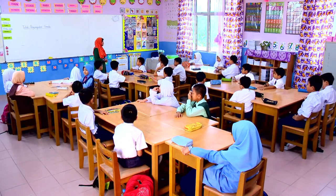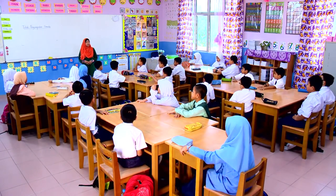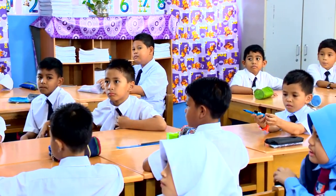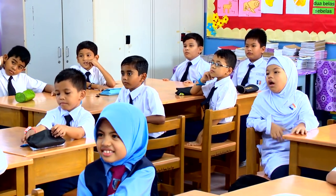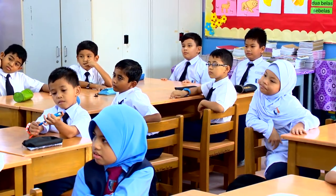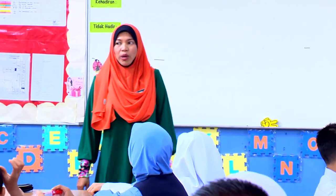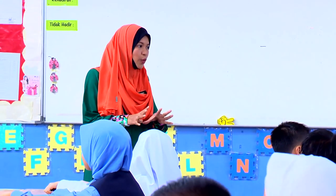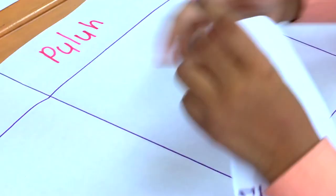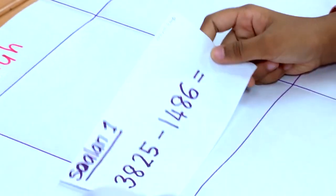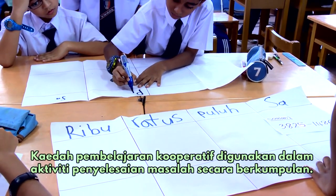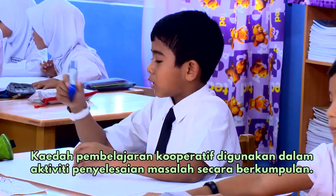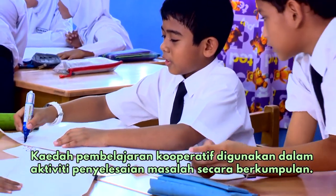Kita akan teruskan pengajaran dan pembelajaran kita dengan aktiviti kumpulan. Setiap kumpulan akan diedarkan sebanyak 2 soalan berserta dengan jadual nilai tempat. Kita boleh mulakan aktiviti kumpulan sekarang. Yang kecil atas — ruangan kecil atas untuk nama nilai tempat.